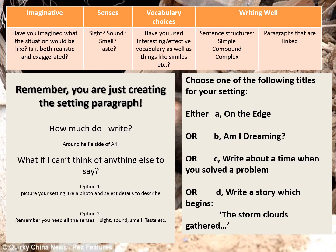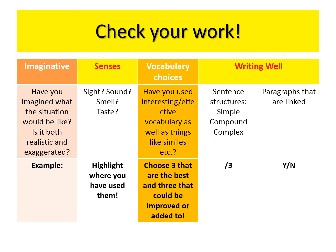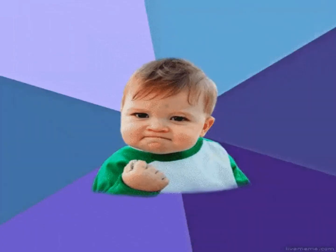So over to you. You can see the criteria — things I'll be looking for in your work: imaginative, senses, vocab choices. There are four question options to choose from on the right-hand side. Please choose one to write a response as part of your revision. I'm looking for a setting paragraph about half a side of A4 long — picture your setting like a photograph, select details to describe, and remember you need all the senses to get the absolute best at this activity. Then check your work and complete the activity at the bottom to confirm you've got a brilliantly crafted setting paragraph.